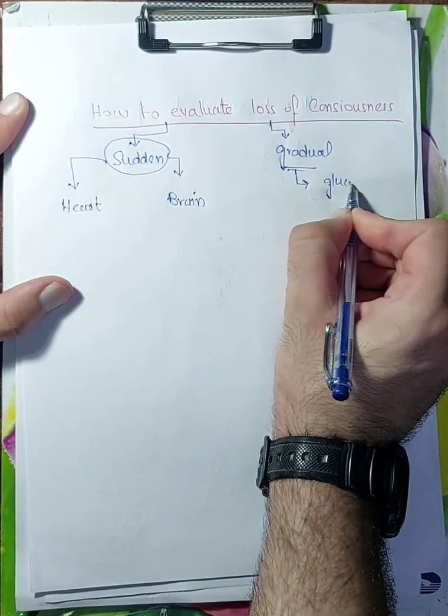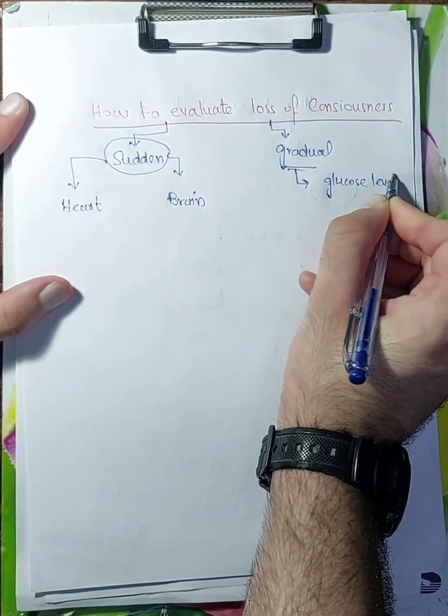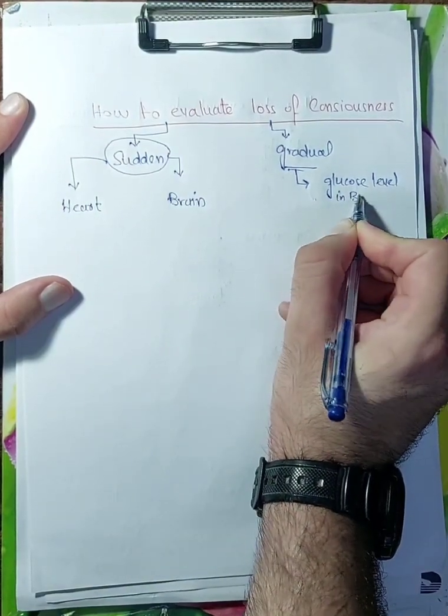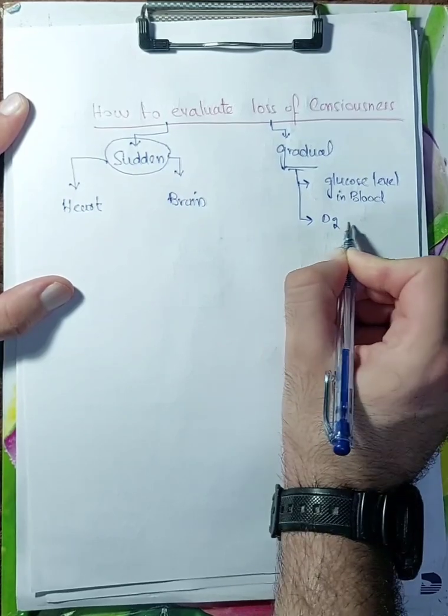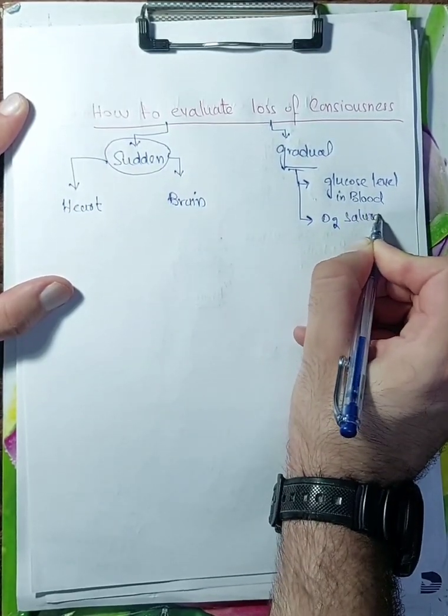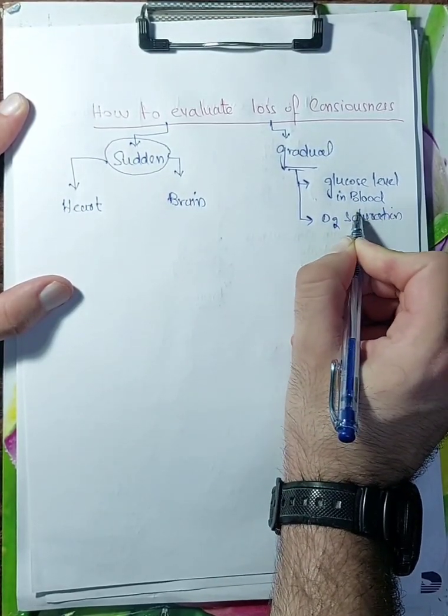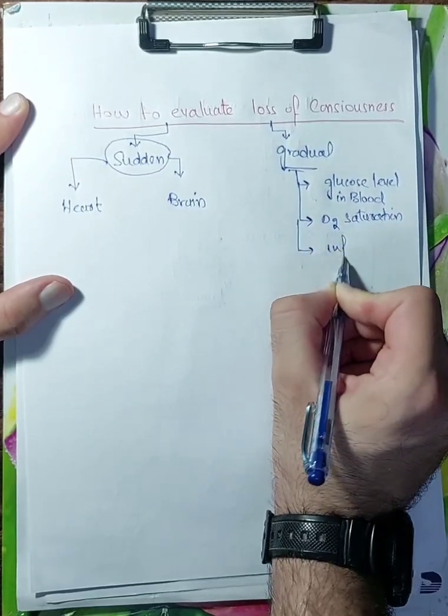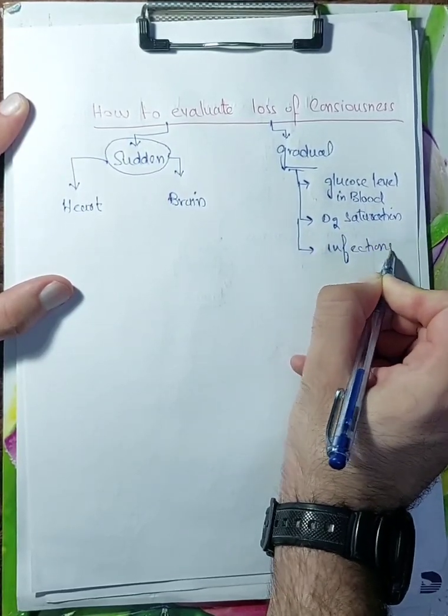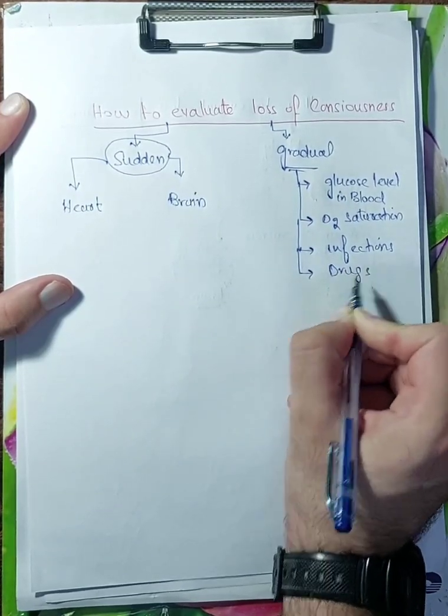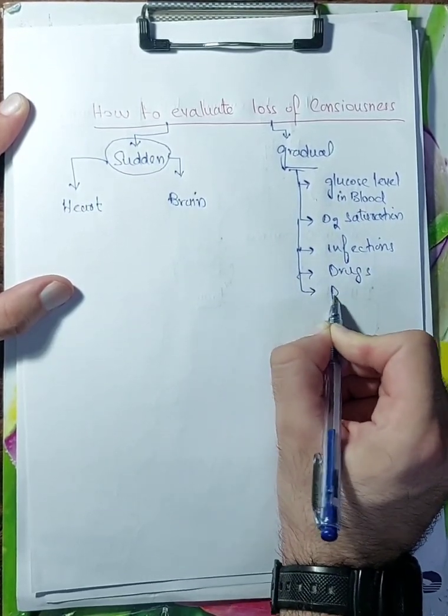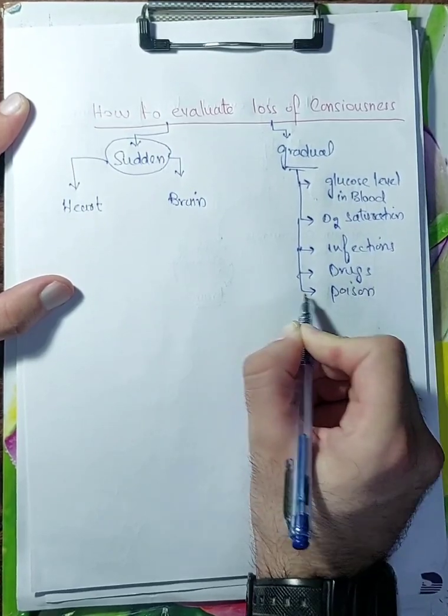Glucose level in blood. Number two, oxygen saturation. Number three, infections. Number four, drugs. And number five, poison.